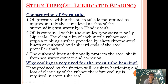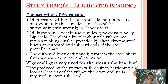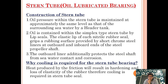Construction of a stern tube oil lubricated bearing: oil pressure within the stern tube is maintained at approximately the same level as that of the surrounding water by a header tank. As you can see, here is a header tank. If somebody asks you why this header tank is provided, you should say the header tank is provided so that it will be able to maintain approximately the same oil pressure as the surrounding sea water. Oil is contained within the simplest type stern tube by a lip seal.